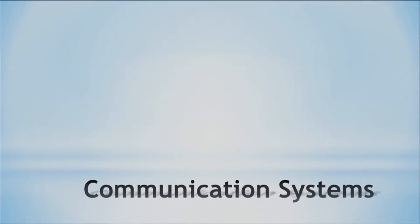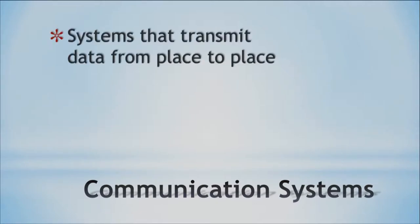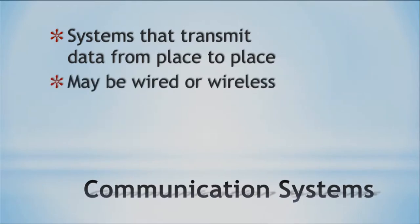We'll begin by talking about communication systems. A communication system is a system that transmits data from one place to another — for example, from your computer to a server and back. These systems may be wired or wireless. Many years ago, like 15-20 years ago, everything was wired. Now most things are wireless, and more and more things continue to move to wireless.